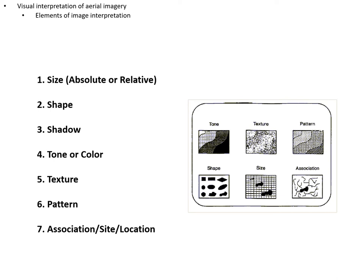Following on from the last lecture, here are the elements of image interpretation you've seen before: size, shape, shadow, tone, and color, texture, pattern, and association, site, location. We're going to break these down into two groups so that we don't get an overly long lecture.